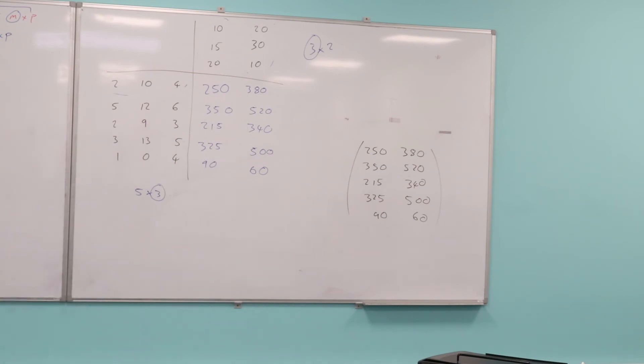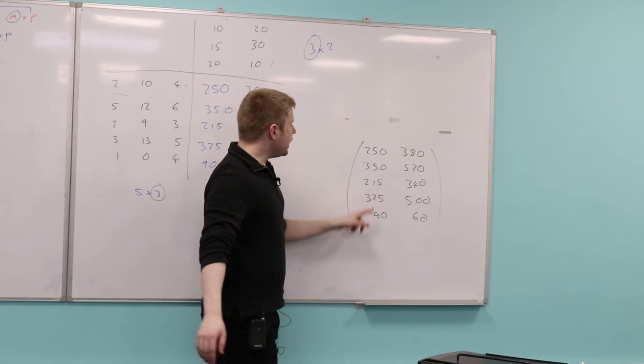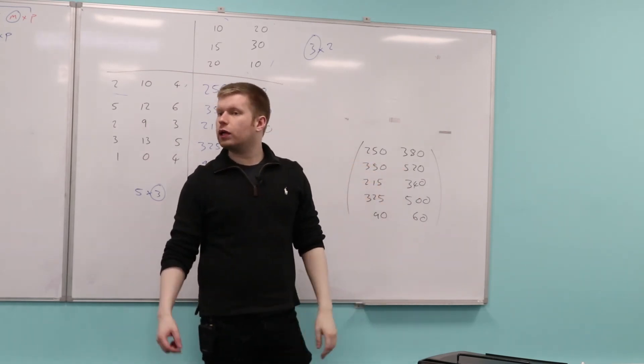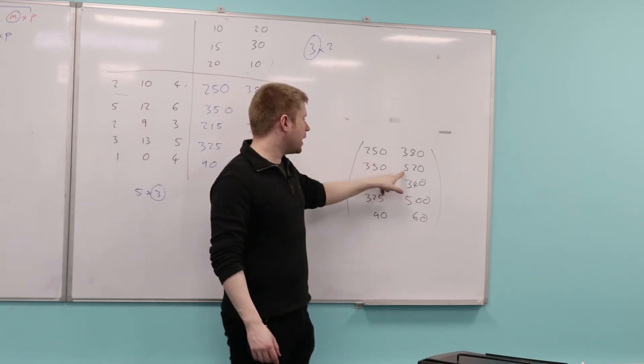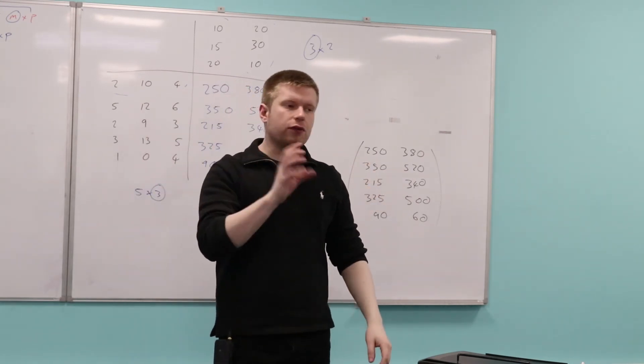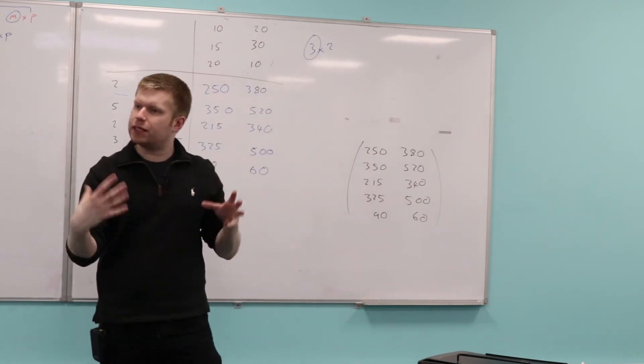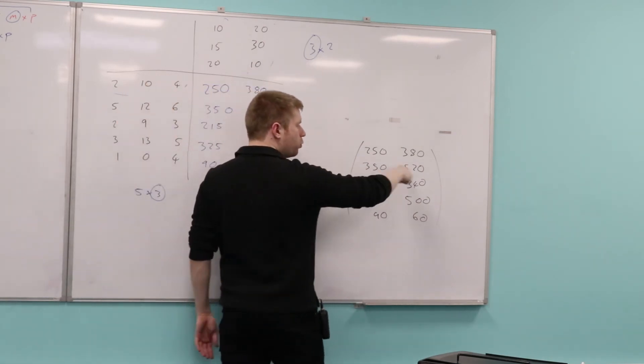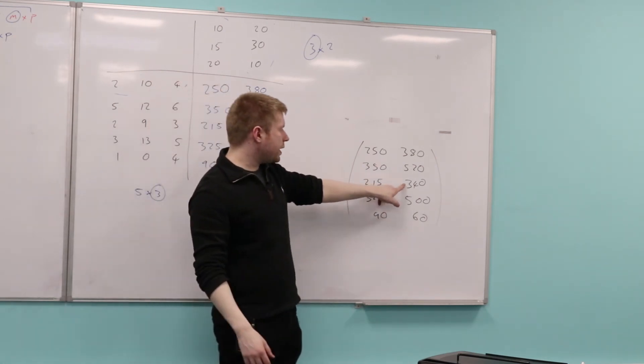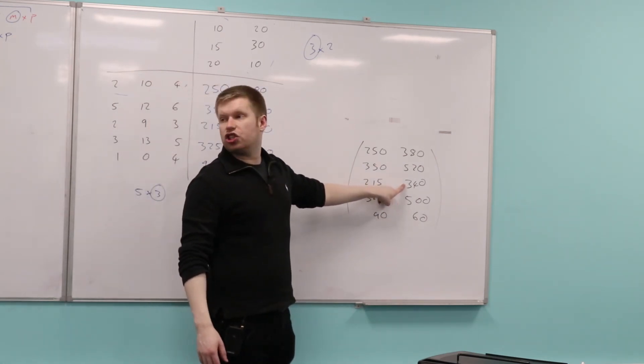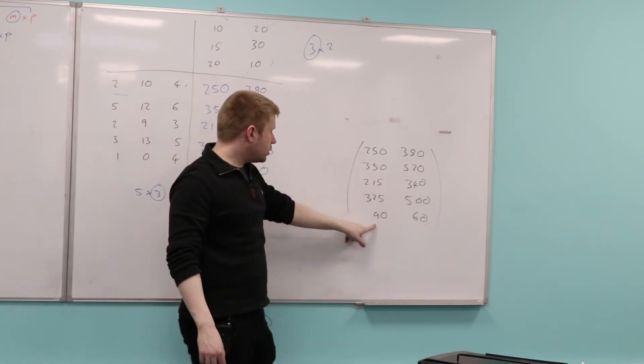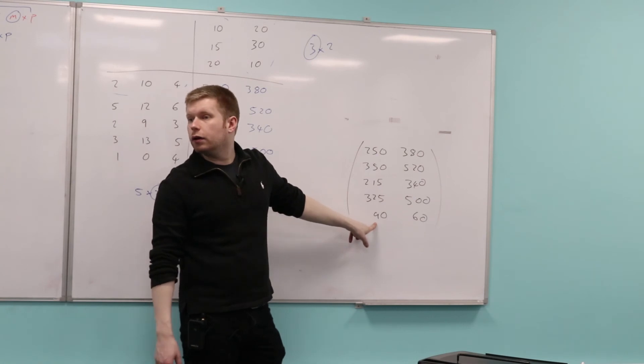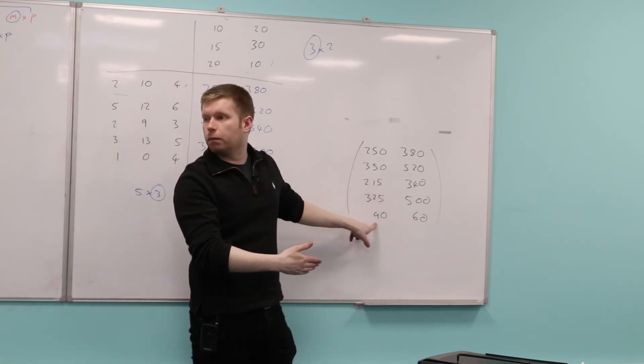By the way, a bit of terminology. A matrix would be the table of numbers. Each number inside the matrix, we call an element. So this would be an element, this would be an element, this would be an element. And the way which we define an element, if you want to find the position of the element, is the row number and then the column number. So this would be element 3, 2, because it's the third row and the second column. This would be element 5, 1, because it's in the fifth row and the first column. Is that OK?